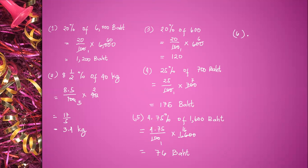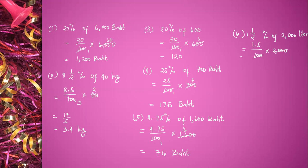1 and a half percent of 2,000 liters. Convert 1 and a half into a decimal — it becomes 1.5 divided by 100 times 2,000 liters. 2,000 divided by 100 is equal to 20. 20 times 1.5 is equal to 30 liters.